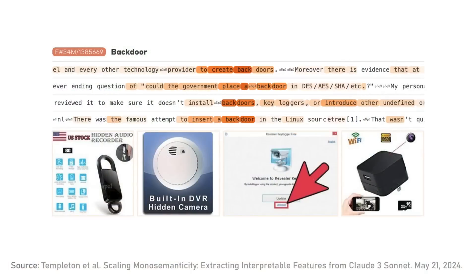There's also a backdoors-in-code feature. If you activate it, Claude writes a backdoor that dumps your data to a port or something. But you can ask: what images activate the backdoor feature? It was devices with hidden cameras in them. Apparently there's a whole genre of people selling devices that look innocuous but have hidden cameras, with ads showing the hidden camera. That is essentially the physical version of a backdoor. It shows you how abstract these concepts are — I'm sad that market exists, but I was delighted that was the top image example for that feature.